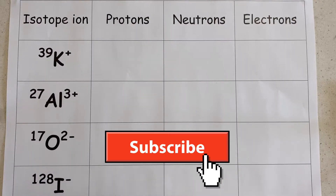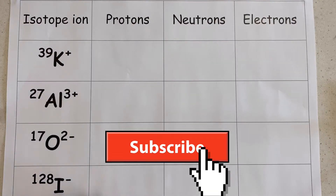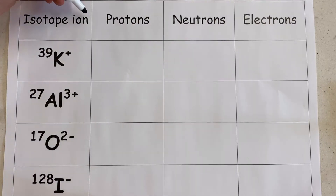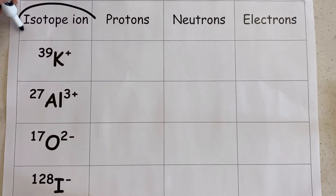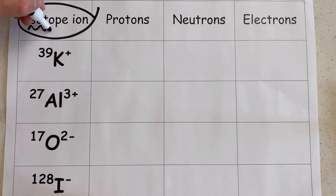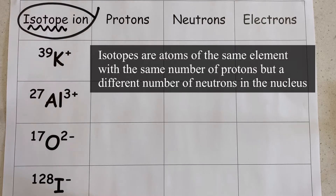Hi there everybody and welcome back. In this video we're going to take a look at how we determine the number of protons, neutrons and electrons in ions of different isotopes.